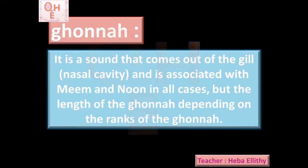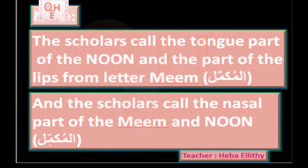Al-Khayshum is the nasal passage. Letter noon and letter meem — nobody can sound letter noon without ghunna. You can't; it will not come out. Letter meem is the same. So ghunna is coming from the nasal passage, and it is in noon and meem in all cases. Nobody can pronounce these two letters without ghunna.